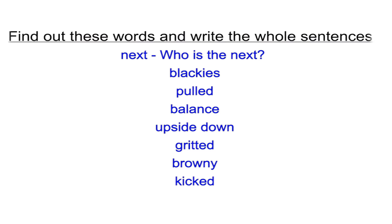The movement of the activity is: find out these words and write the whole sentence. Who is next? The bear pulled the tiger's tail — that sentence is highlighted. Balance. Upside down. Gritted — the giraffe gritted its teeth — that sentence is highlighted.